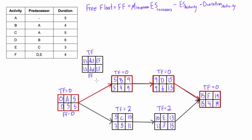One important rule: free float always has to be less than or equal to total float. So if you've already identified the critical path — all activities with a total float of zero — you can immediately fill in their free floats as zero as well, or you can just double-check by calculation.